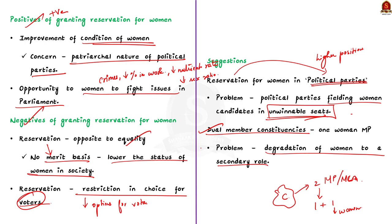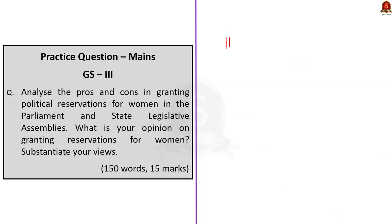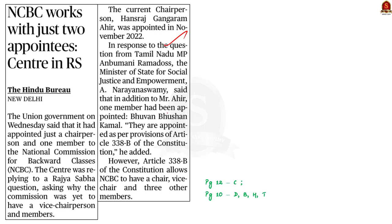The next article says that the National Commission for Backward Classes (NCBC) is functioning with just two appointees. Article 338B of the constitution allows NCBC to have a chairperson, vice chairperson, and three other members, but the centre has only appointed a chairperson and one member. NCBC was initially constituted by the central government through the National Commission for Backward Classes Act of 1993, making it initially a statutory body. However, NCBC now has constitutional status as per the 102nd Constitutional Amendment Act of 2018, which inserted Article 338B. This constitutional amendment emerged from the text of Article 340, which says the President may appoint a commission to investigate the conditions of socially and educationally backward classes within the territory of India. NCBC functions under the Ministry of Social Justice and Empowerment.